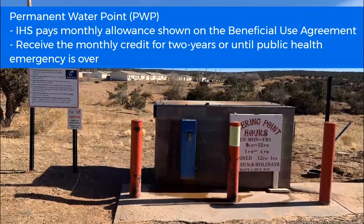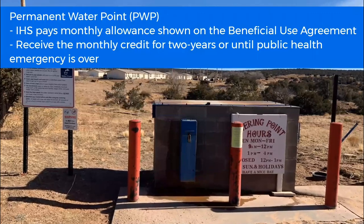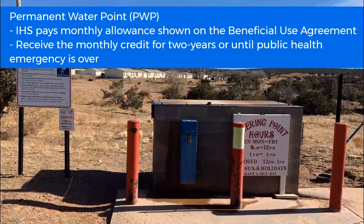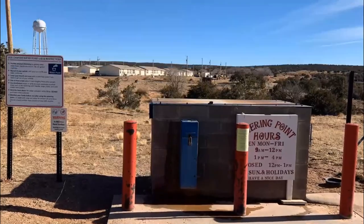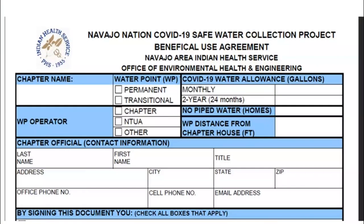For a PWP, it's a little bit different. IHS is going to pay the monthly allowance shown on the BUA, and it's going to show up as a credit on your account each month for two years or until the public health emergency is over, whichever is sooner. Here's a copy of one of the Beneficial Use Agreements for the Water Collection Project. The chapter should have been provided a copy of each BUA for their reference. On the top line on the right you can see your monthly water allowance, and right below that is the two-year total. This was calculated based on the number of homes without piped water in your community, so each chapter is going to be different.